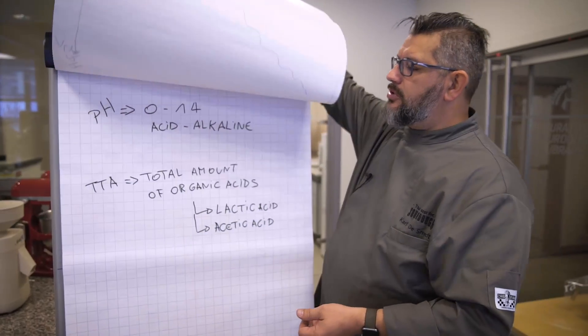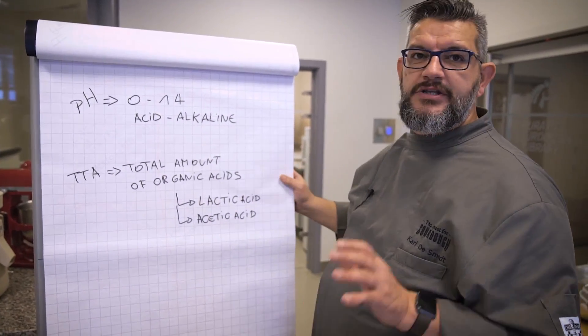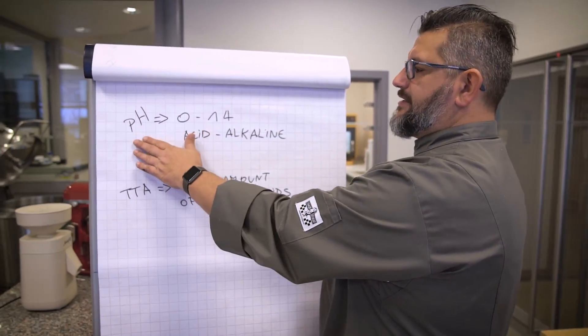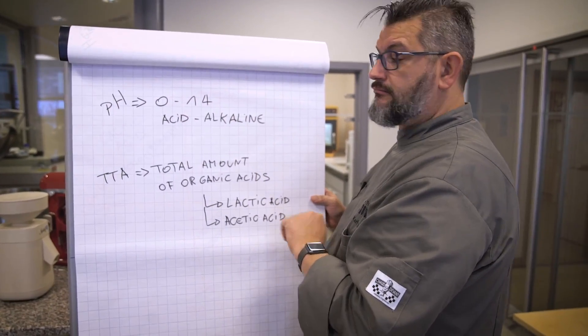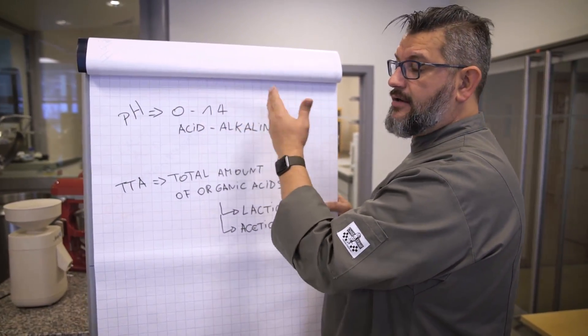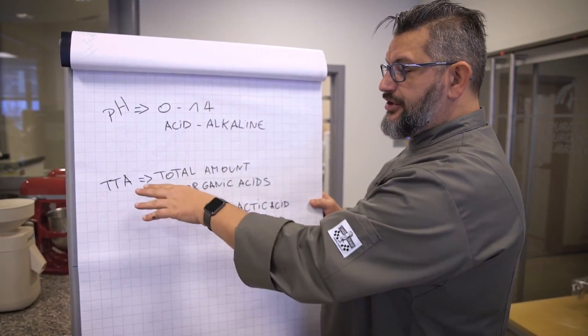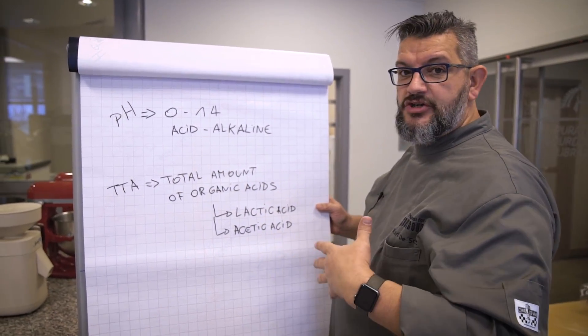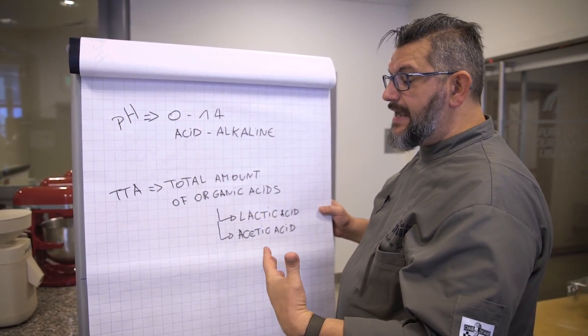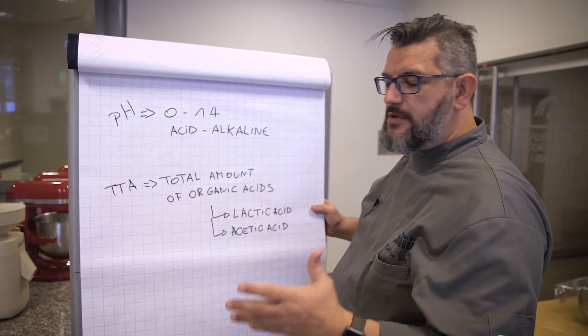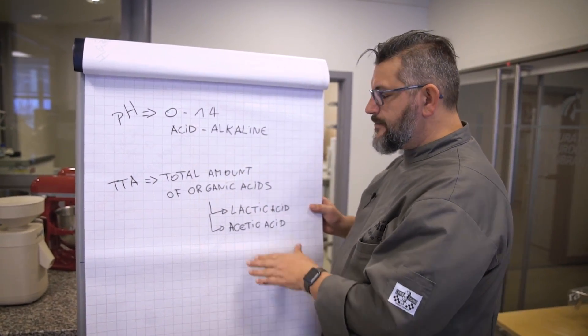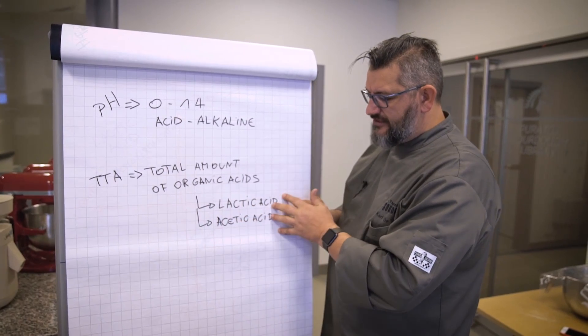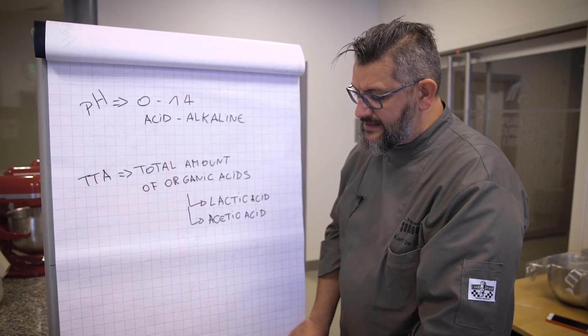To slowly conclude, what you need to remember is that pH is a scale from 0 to 14, with acid and alkaline or basic. The TTA is the total amount of organic acids and that is measured in a different way. It's measured by titration. So a pH meter will have nothing to do with it. And you have to know that these organic acids is the combination of lactic acid and acetic acid.